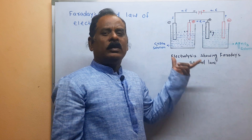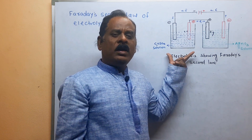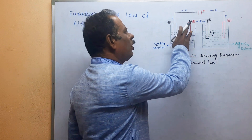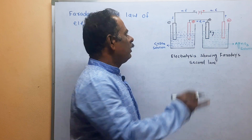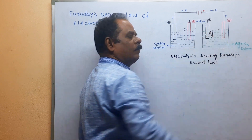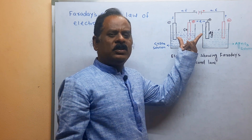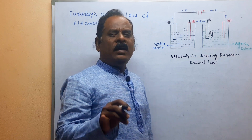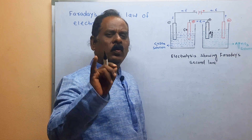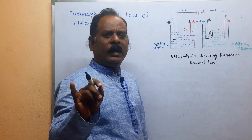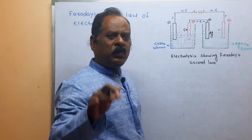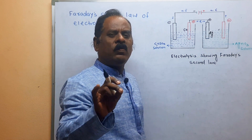What is Faraday's second law? This law states that when the same quantity of electricity is passed through different electrolyte solutions arranged in series, the amount of substance deposited on the cathode — here copper is deposited on this cathode and silver is deposited on that cathode — is directly proportional to its chemical equivalent or its equivalent weight.